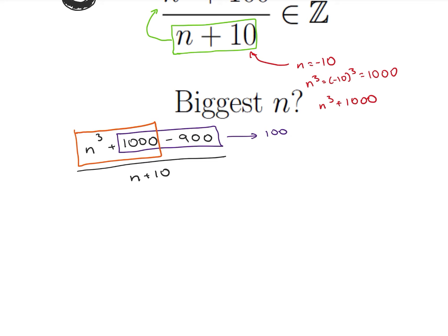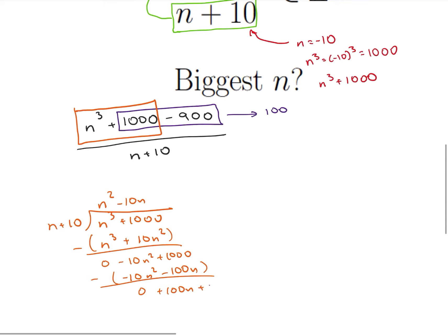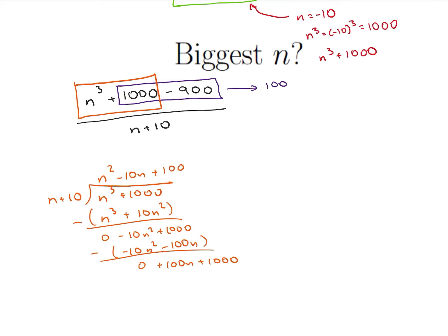So if I have n cubed plus 1000 and I divide that by n plus 10, I can put that in n squared times, that's going to give me n cubed plus 10 n squared. Subtract that, we get 0 minus 10 n squared plus 1000. And goes in there minus 10 n times. So then we get minus 10 n squared minus 100 n. Subtract that again, we get 0 plus 100 n plus 1000. And now I'm going to have plus 100 and we see that divides in perfectly. So this then can then be rewritten as n squared minus 10 n plus 100.